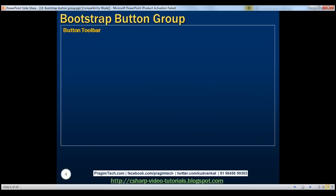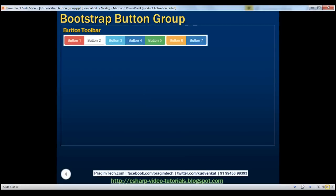Let's now discuss creating a button toolbar. Within the button toolbar, we've got three button groups. Within the first button group, two buttons; in the second button group, three buttons; and in the last one, two buttons. Let's see how we create this button toolbar using these three button groups.